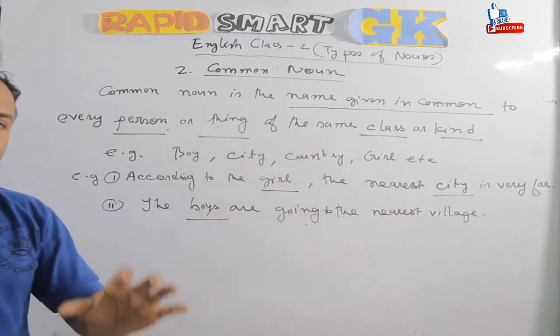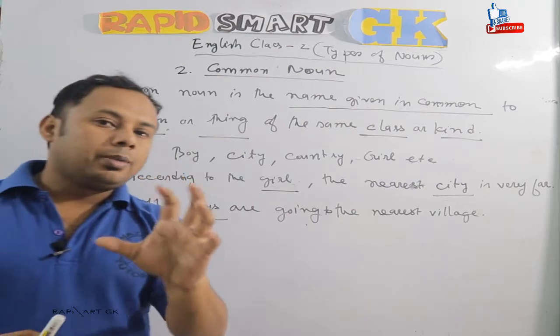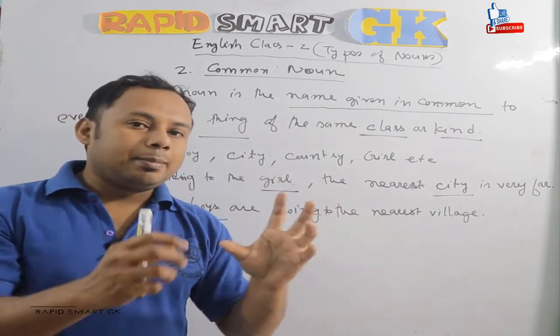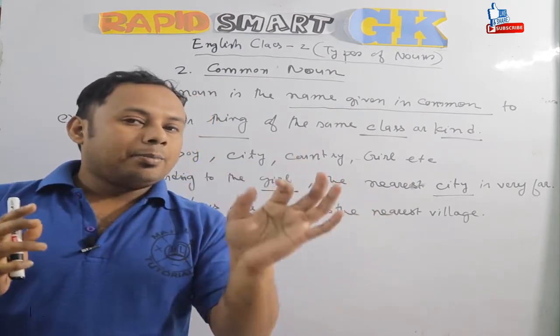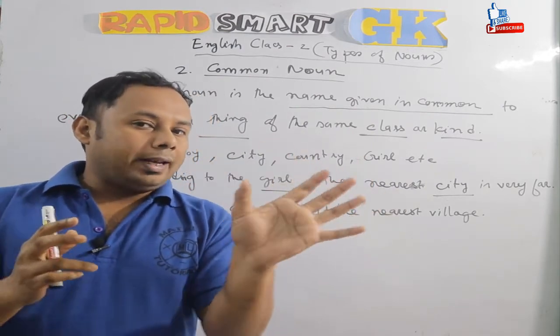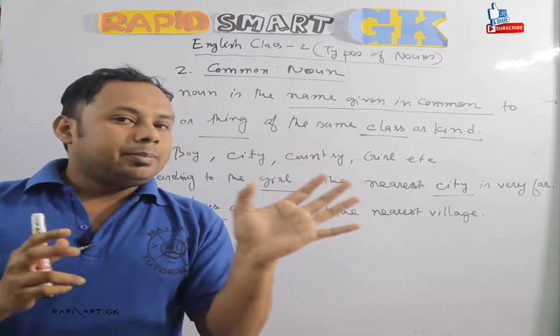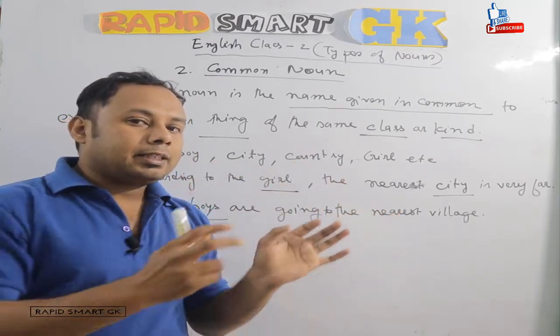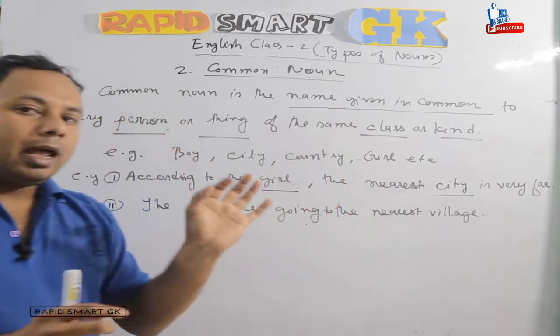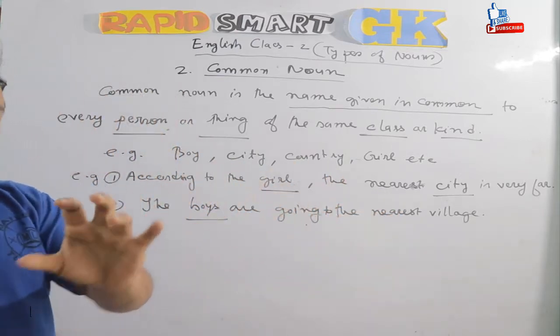For example, names like Ram, Rahim, Gita, Sita are proper nouns, but the general category they belong to — person — is a common noun. You can use this type of name as a common noun.